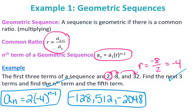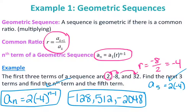To find the fifth term, since I already have the formula for the geometric sequence, I can plug in 5 for n. I have a_5 equals 2 times negative 4 to the 5 minus 1, so 2 times negative 4 to the 4th power, which is 512. If you needed to find something like the 15th term, you would want to use the formula for the sequence.